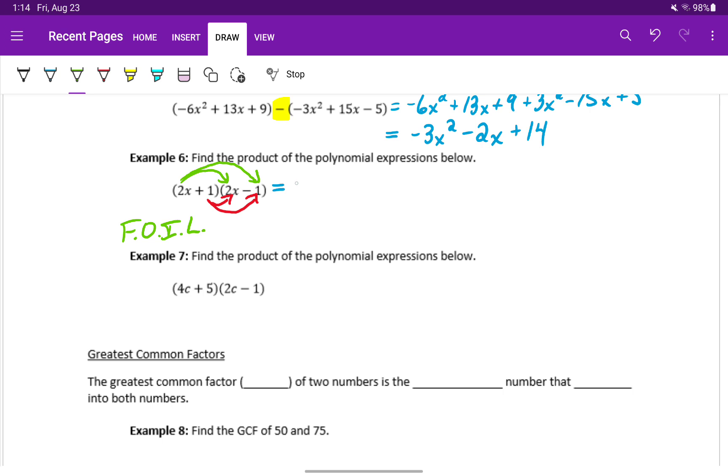Multiplying our first terms, we'll take the 2x from that first binomial, times the 2x from the second binomial. Then we'll look at our outside terms. That will be the 2x from the first binomial, times the minus 1 from the second binomial.